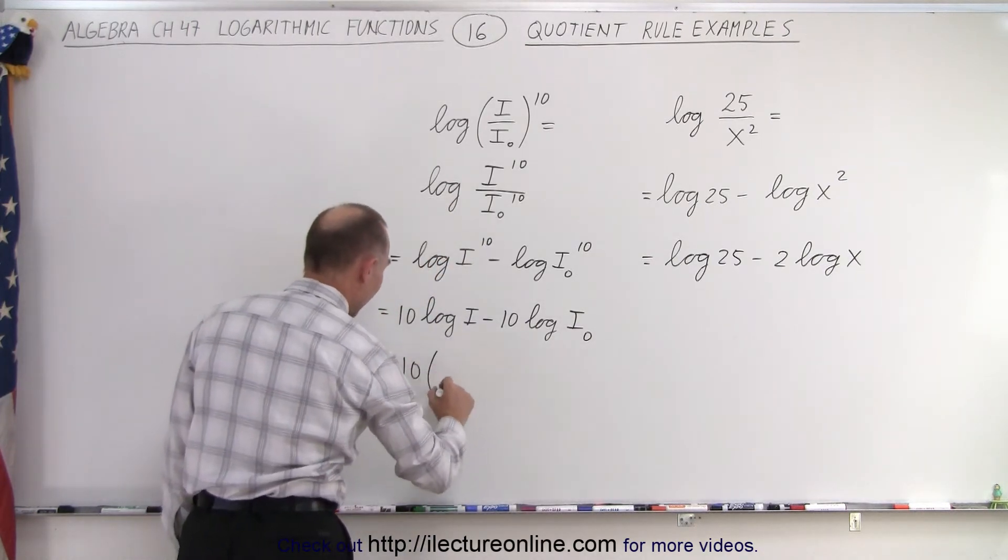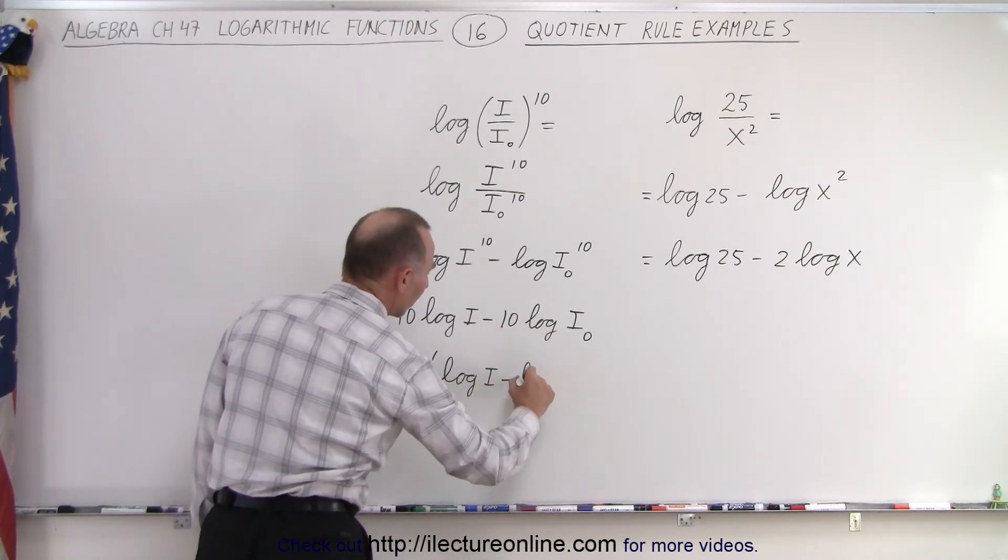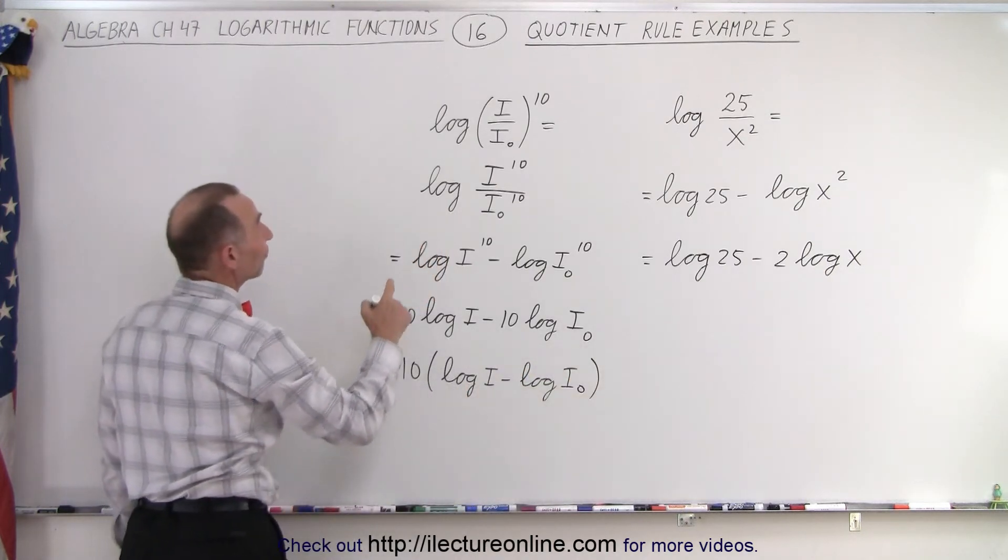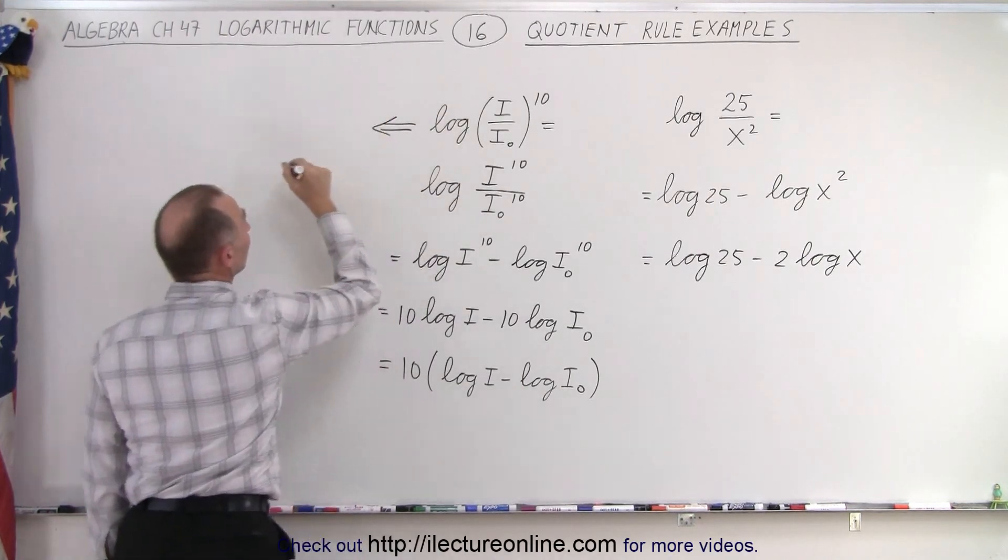And then we could factor out the 10, and then this would look like 10 times the log of i minus the log of i sub naught. And notice that if we had first taken the 10 and moved it in front, we can actually make it look like this.